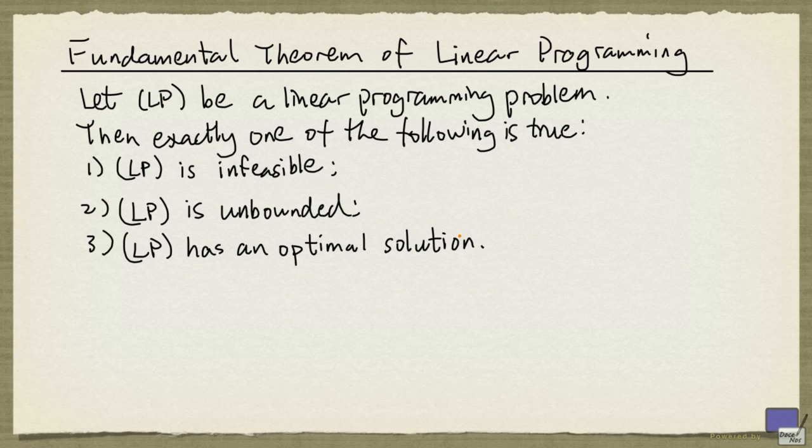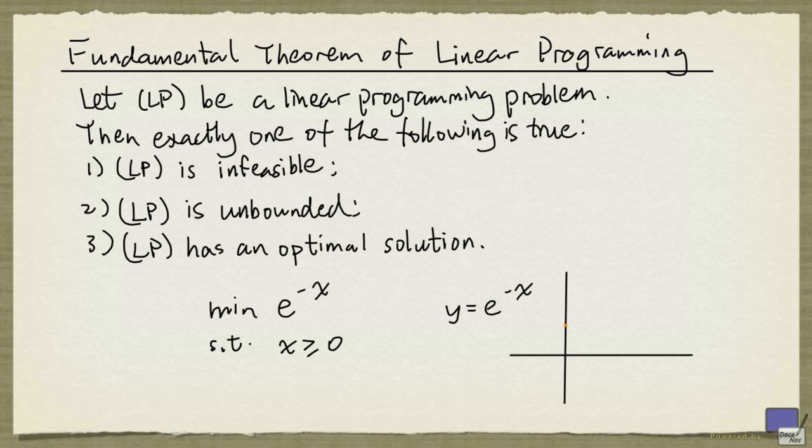This is really a feature of linear programming problems. For example, if we look at minimizing e to the minus x subject to x at least 0. Now we can plot the function y equals e to the minus x when x is at least 0 and it looks like this. So first of all, e to the minus x is positive but we also know that and we can see from this picture it can get arbitrarily close to 0. So this problem is not infeasible, it's not unbounded, but it has no optimal solution because 0 is never attained.